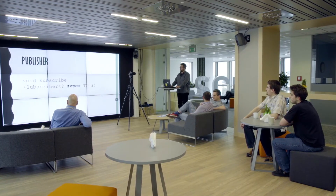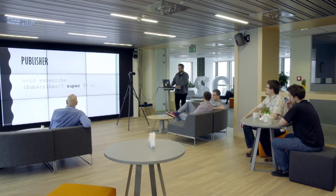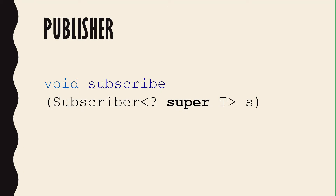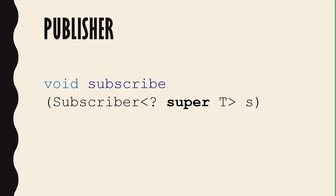Another interface is Publisher. Publisher just has one method, and this method takes a subscriber and creates a subscription object, which is used to connect the publisher and subscriber. It's the only way they communicate.